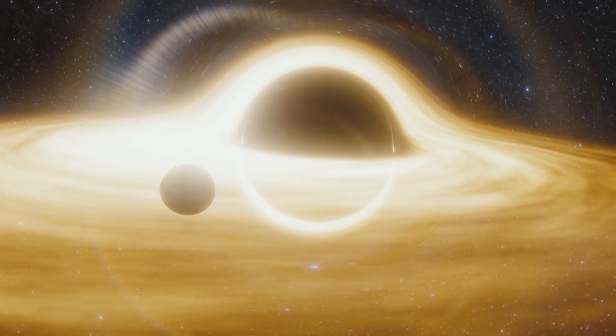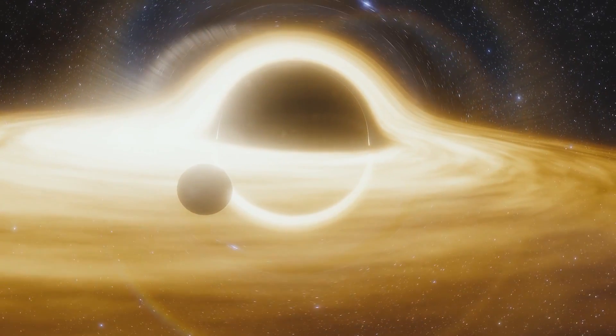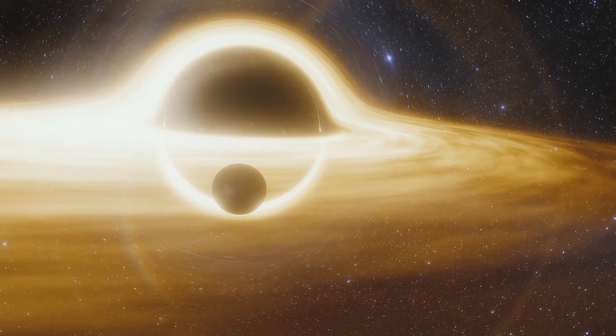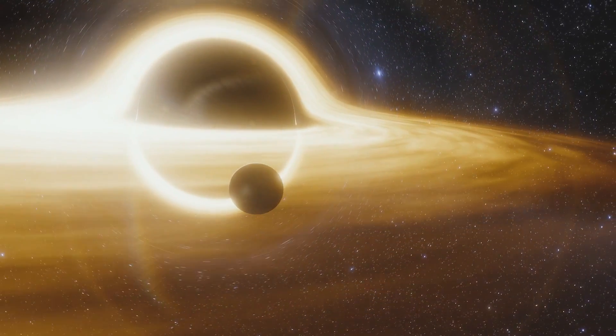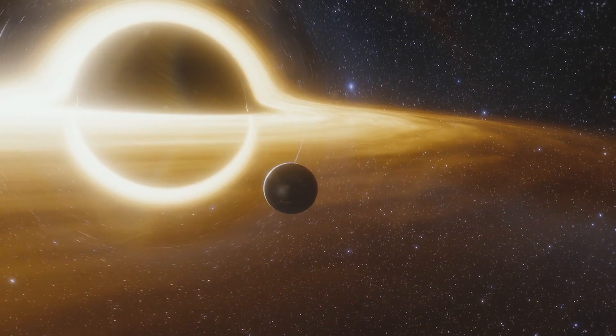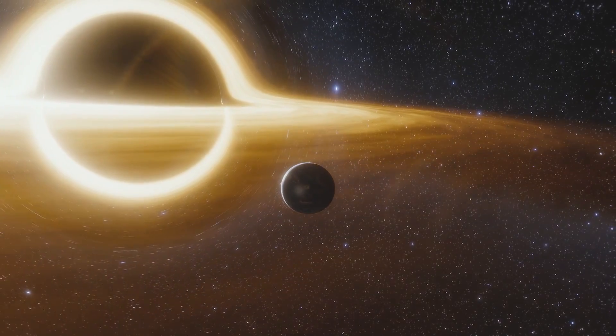At far enough distances from the black hole, at least 10 light-years, the gravitational environment is stable enough for planets to form from the dense dust of the accretion disk. According to published research, more than 10,000 planets are possible around a supermassive black hole.